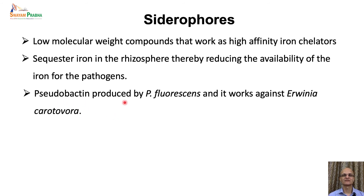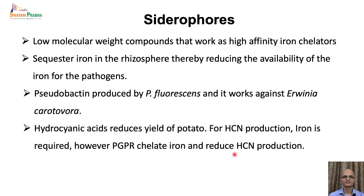Pseudobactin, produced by Pseudomonas fluorescens, is an example of a siderophore — a yellow-green fluorescent siderophore that works against the plant pathogen Erwinia carotovora. Pseudobactin-producing PGPRs can be used to control this plant pathogen. Similarly, hydrocyanic acid in the rhizosphere reduces overall crop yield in potato. For HCN production, iron is required. However, in the presence of PGPRs that chelate iron, iron becomes unavailable for HCN production, thereby reducing HCN production and improving potato crop yield.